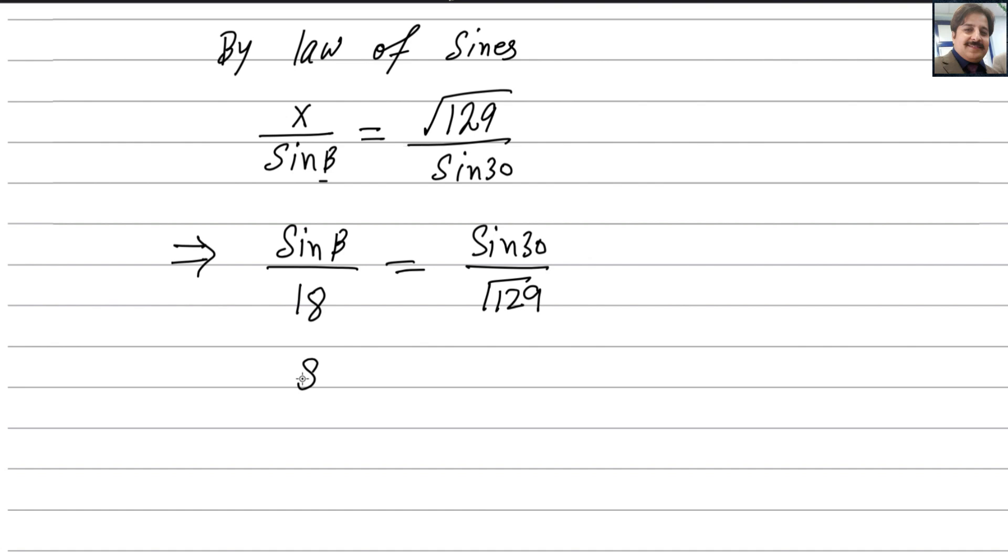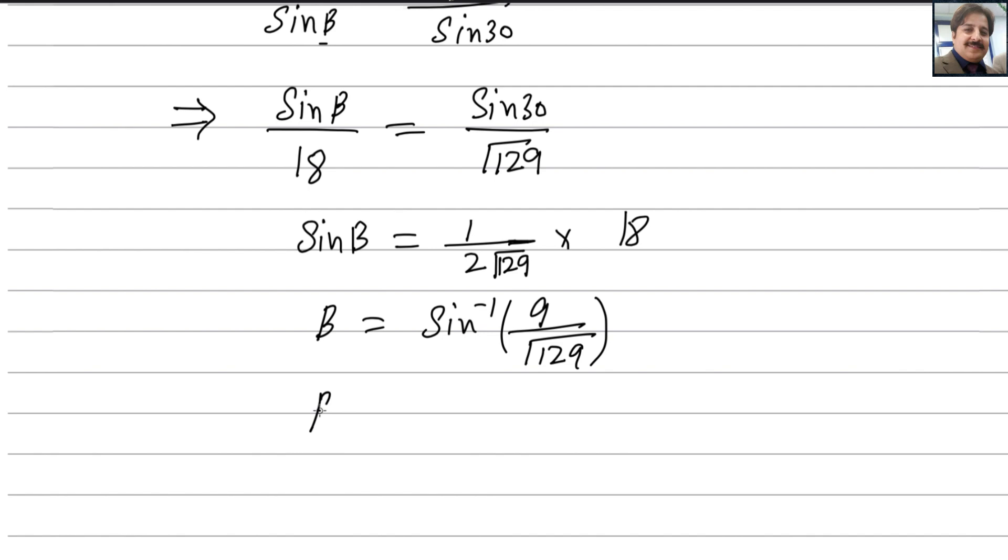Now get the value for sine beta. Sine 30 is 1 over 2 and root 129. Multiply this heading. To get beta, we will simplify this one and take inverse of this answer to get beta because sine goes to the other side, it becomes inverse. So it will be 9 over root 129. Take the inverse of this value. Beta will be equals to 52 degrees to the nearest whole number.